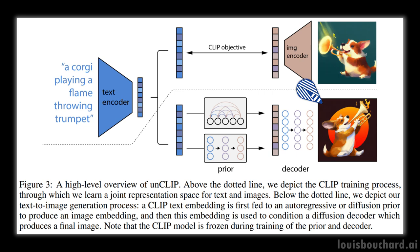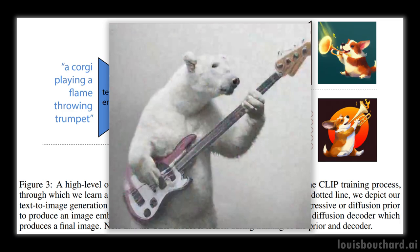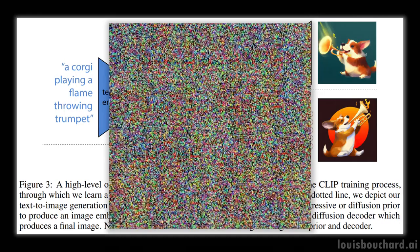A diffusion decoder, or model, is a kind of model that starts with random noise and learns how to iteratively change this noise to get back to an image. It learns that by doing the opposite — during training, we feed it images and apply random Gaussian noise on the image iteratively until we can't see anything other than noise. Then we simply reverse the model to generate images from noise. If you'd like more detail about this kind of network, which are really cool, I invite you to watch the video I made about them.